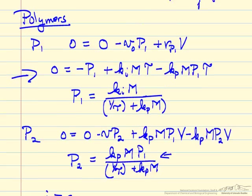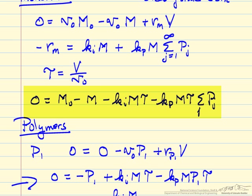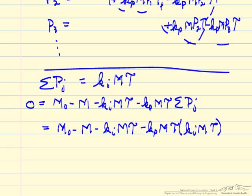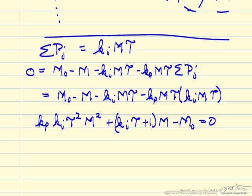Going back to the monomer mass balance, I rewrite that equation because it contains the sum of the polymer concentrations. I've made the substitution that the sum of the polymer concentrations is just related to K_i times m times tau. That means I can now actually calculate the conversion — I can solve for the monomer concentration. We now have an equation in terms of monomer concentration and the constants: the rate constants, residence time, and feed concentration of monomer.